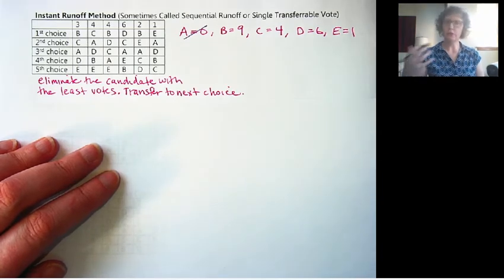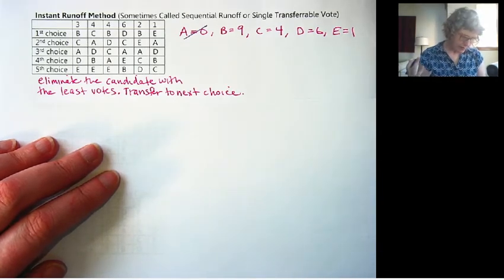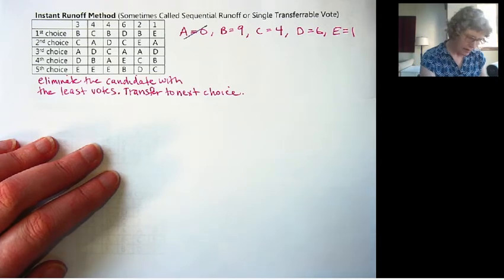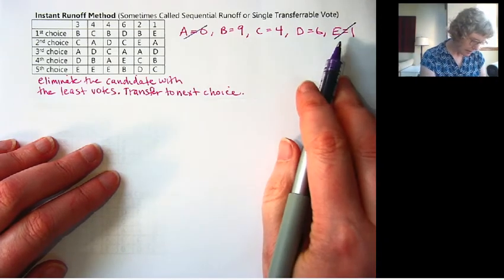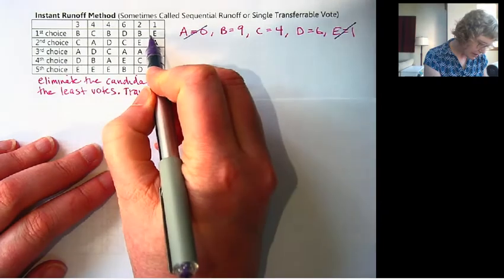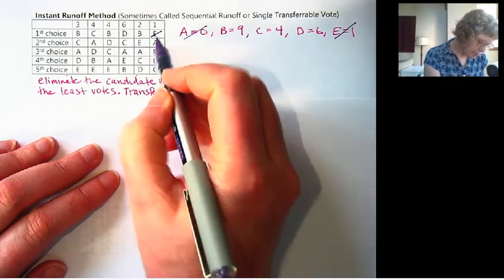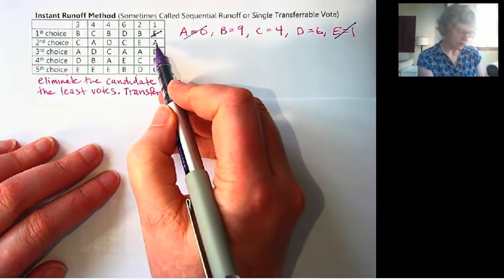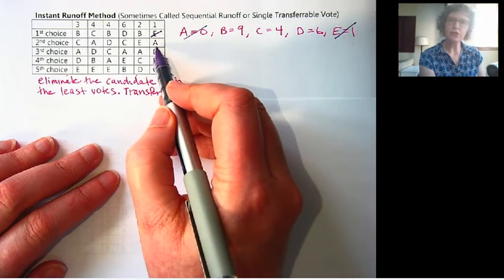Then we go again. Now who has the least number of votes? That is E. So we're going to eliminate E, but we're going to see, okay, E is out of the race. But who was their next choice? This is just one voter here. Who was their next choice?